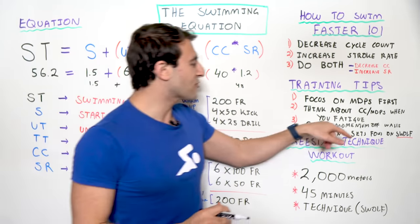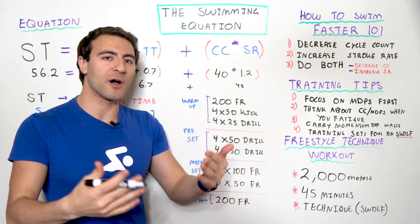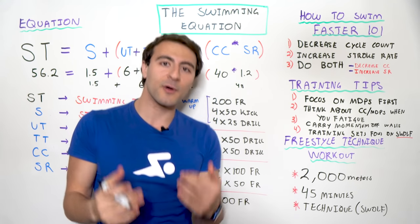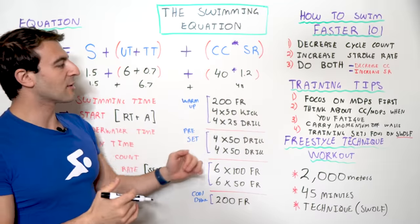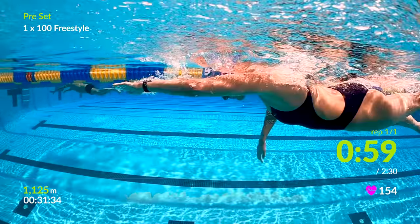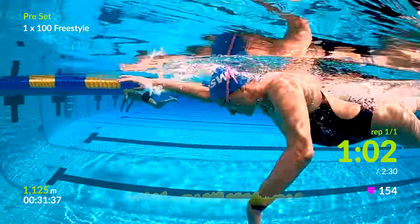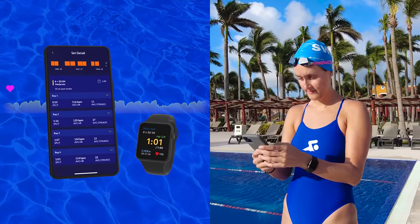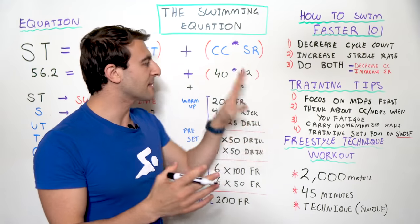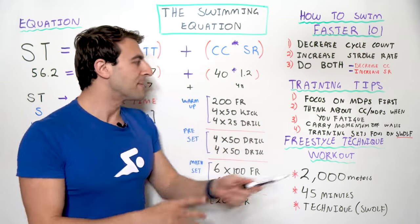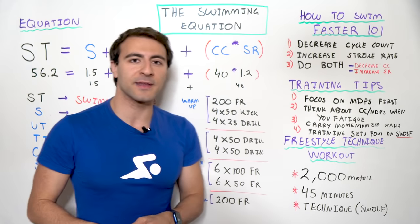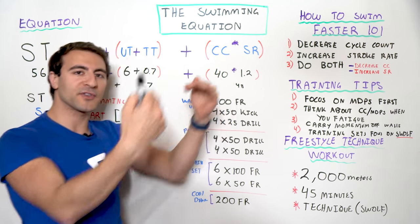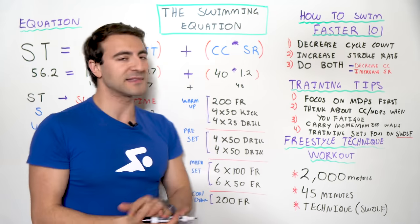Another training tip is to do training sets that focus on your SWALF. SWALF is the swimming version of your swimming efficiency, kind of like golf — you want a lower number. In swimming you want a lower number as well. If you use the MySwimPro app and you're tracking your workouts or following a guided swim with Apple Watch or a Garmin with our app, you can see your SWALF by set and over the course of an entire workout, and you can measure your progress over time. Your SWALF is calculated by your stroke count and your time over the course of 25 meters. You want that number to go down, and that means you're making progress.